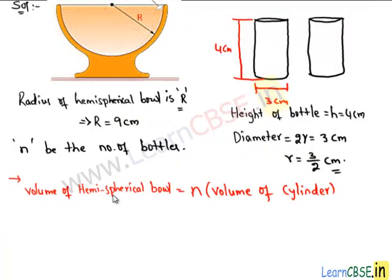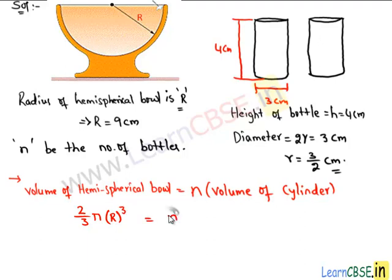The volume of the hemispherical ball is half the volume of a sphere, which is (2/3)πR³, where capital R is the radius of the ball. The volume of each cylinder is the area of the base circle, πr², multiplied by its height h.